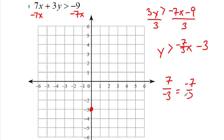So up 7. 1, 2, 3, 4, 5, 6, 7, over 3. 1, 2, 3. I'm going to put my next dot right there.